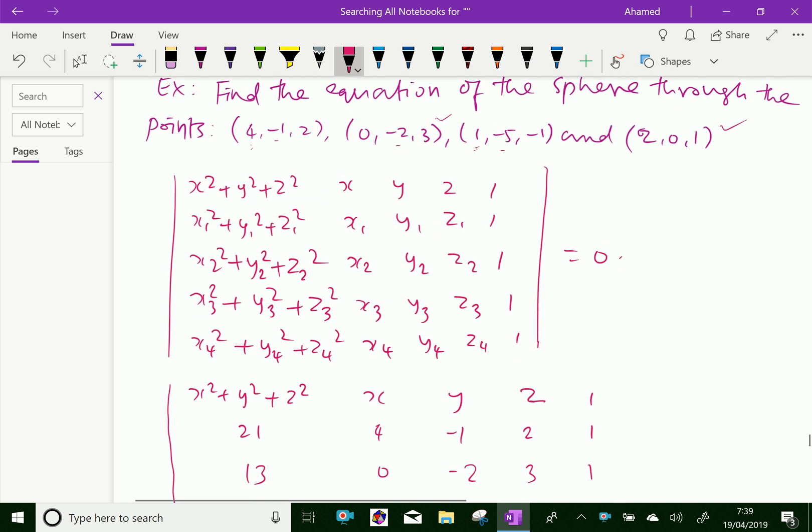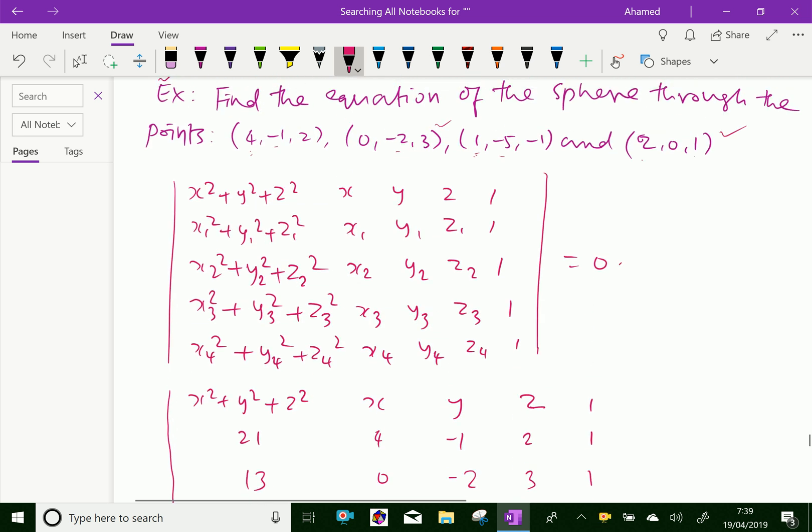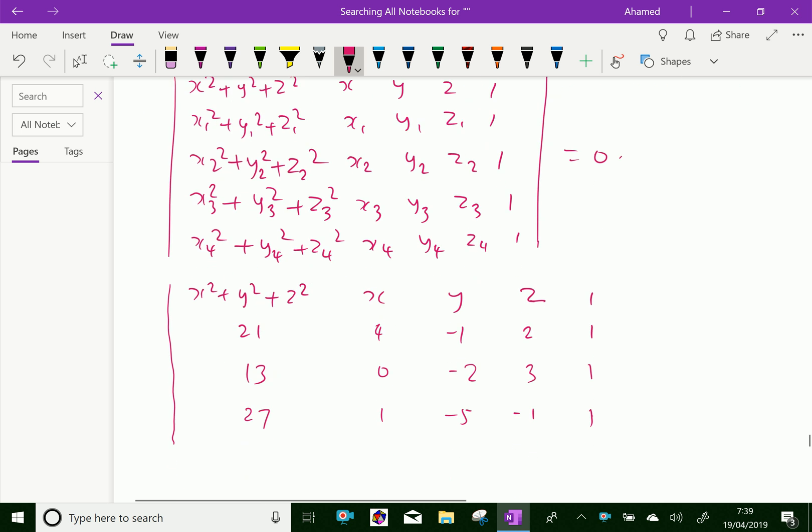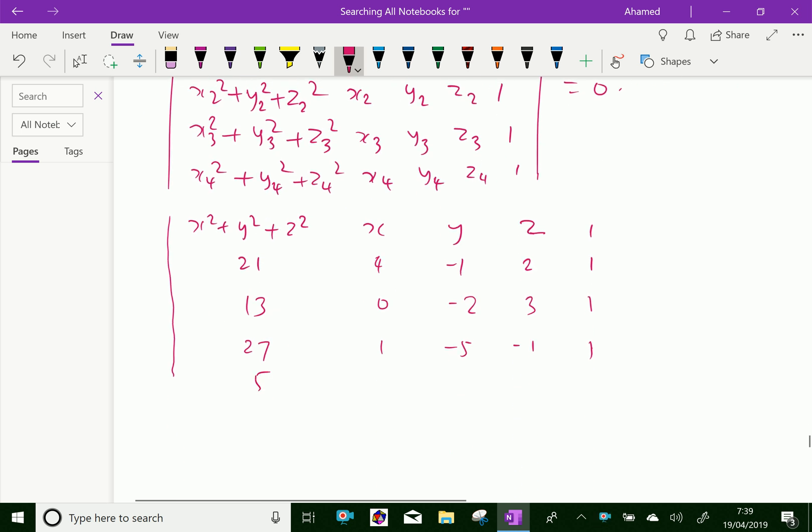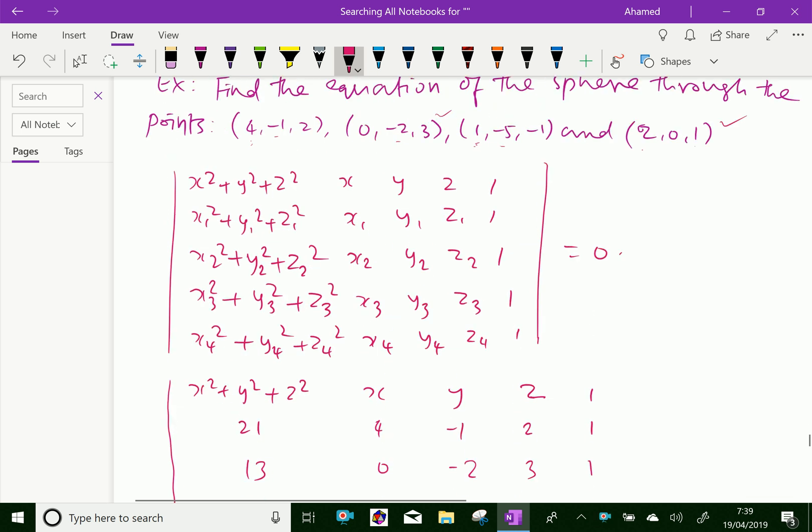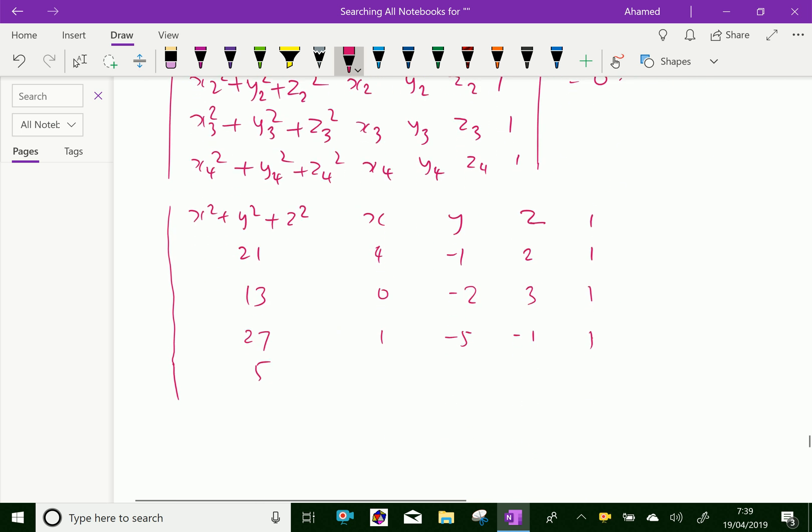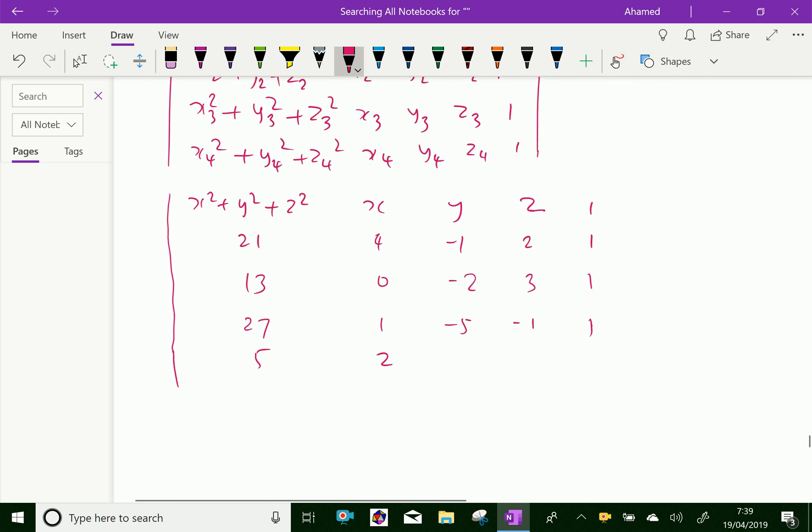The fourth point, 2² is 4, and 1² is 1, 5. Then the fourth point is 2, 0, 1, 2, 0, 1, and 1, equals 0.